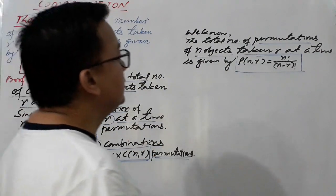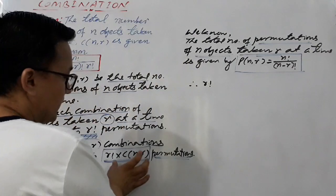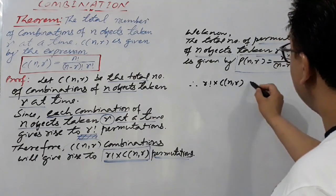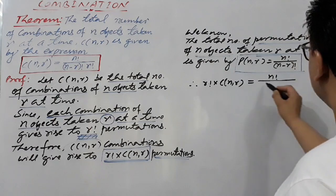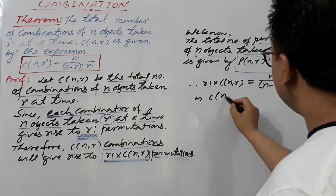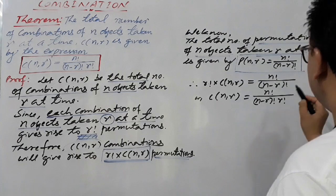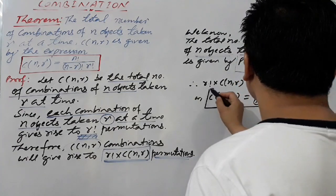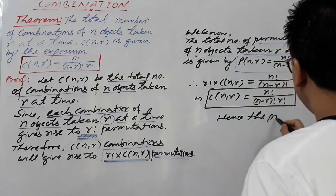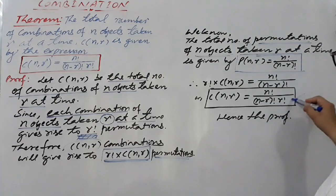Therefore C(n,r) equals n factorial over n minus r factorial times r factorial — that is, n factorial over (n minus r) factorial times r factorial. Hence the proof is complete. This is one of the important theorems in combinations, and this is how we can prove it.